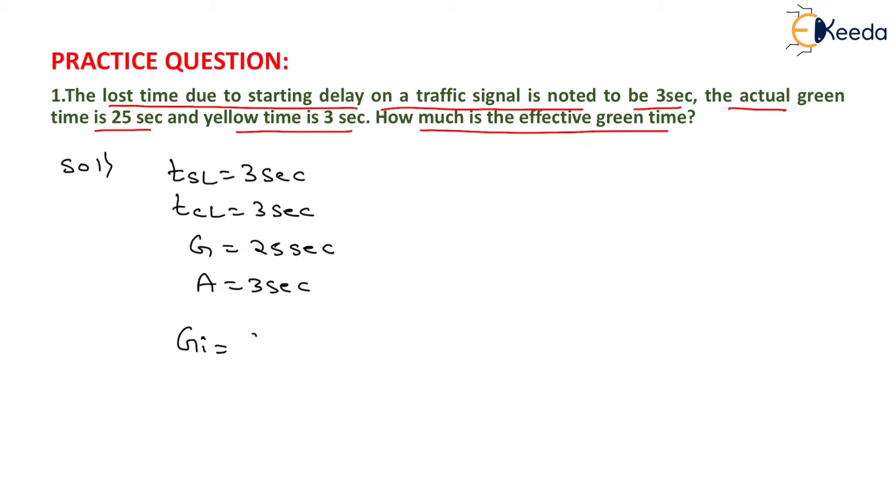So, effective green time will be equal to green time plus amber time minus total loss time, that is startup loss time plus clearance loss time.